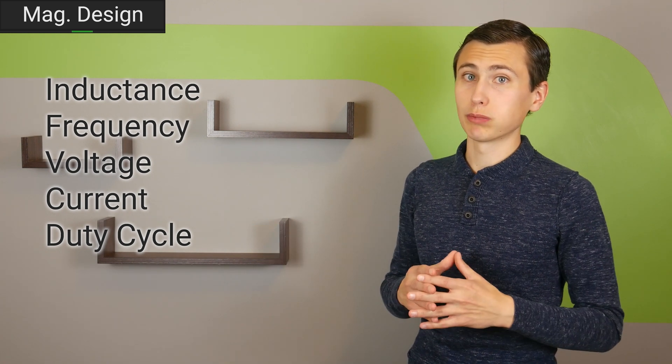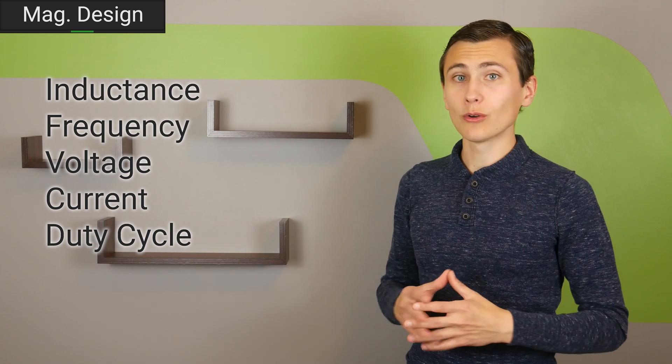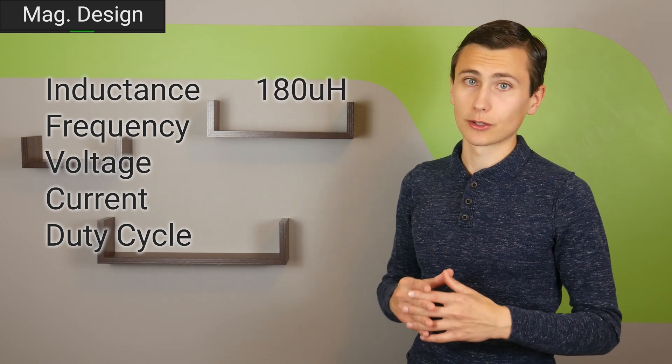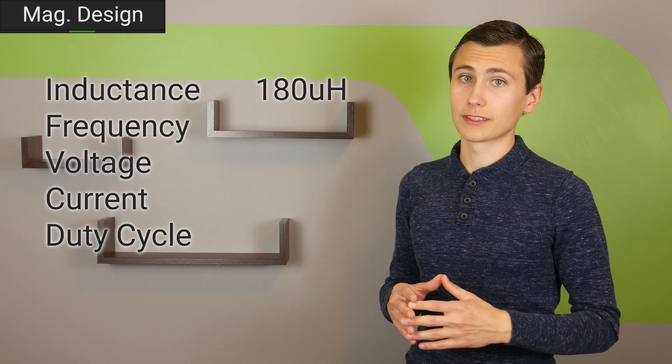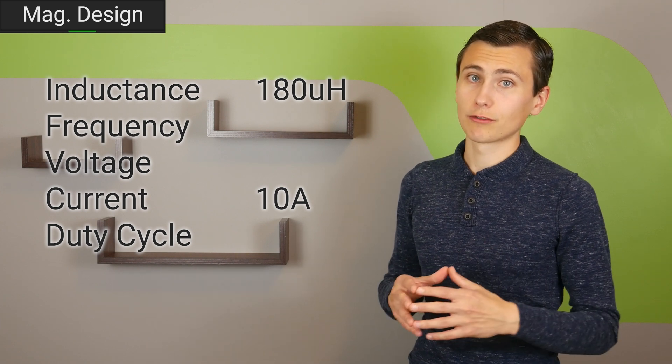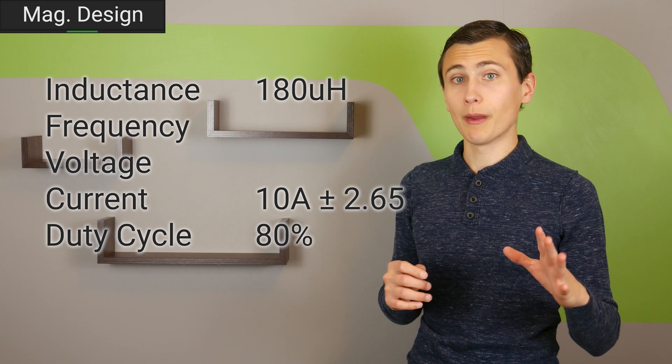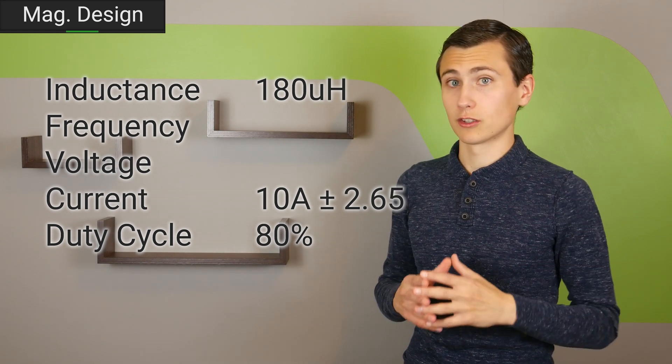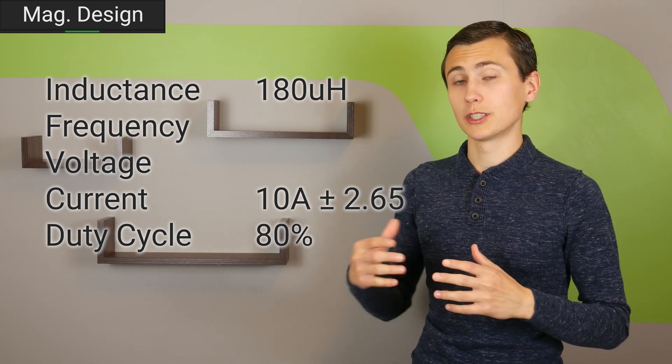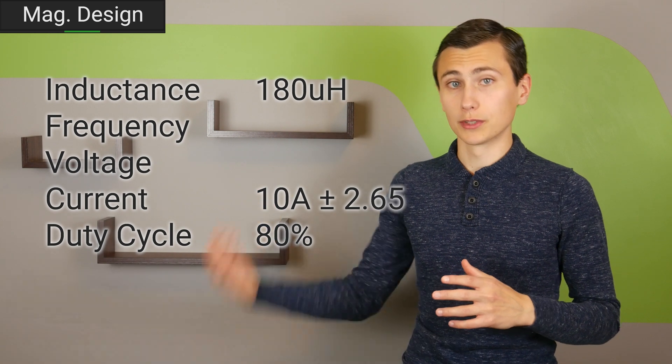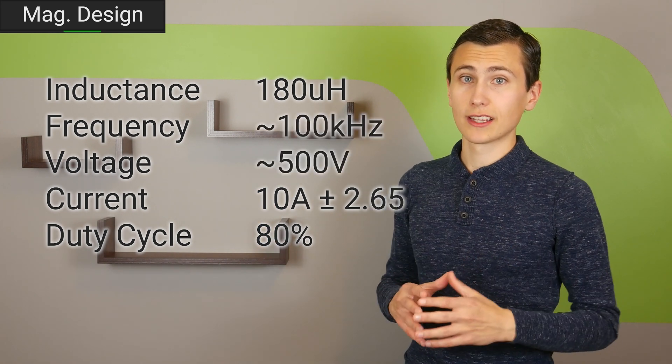Our design goal for this inductor requires 180 µH, an average output current of 10 amps per phase, and a ripple current of 5.3 amps in each inductor at a duty cycle of 80%. Remember, there are two phases in this boost converter, so the current will be shared approximately equally between them.